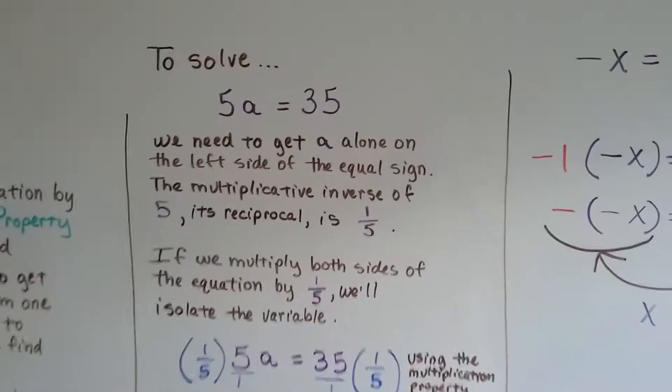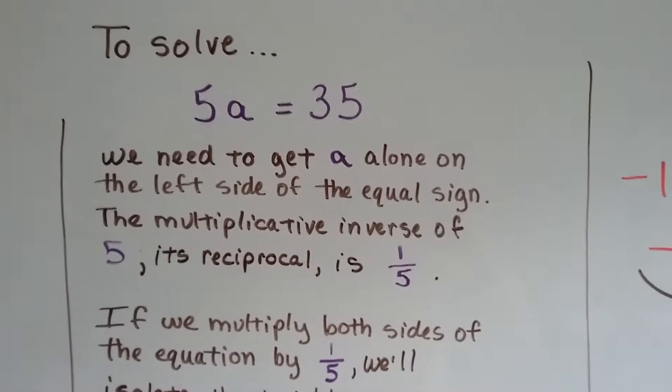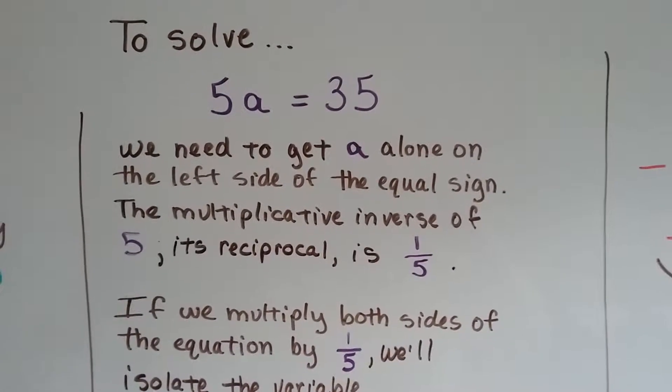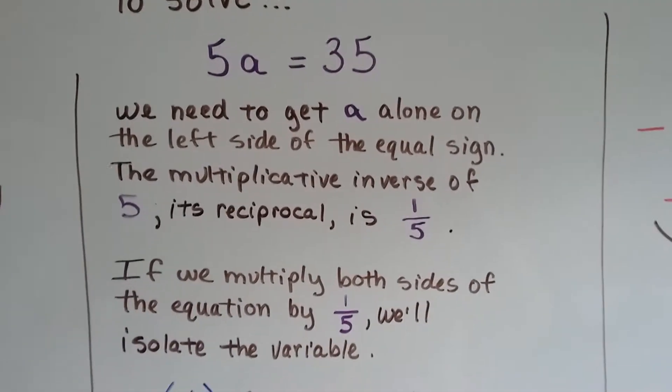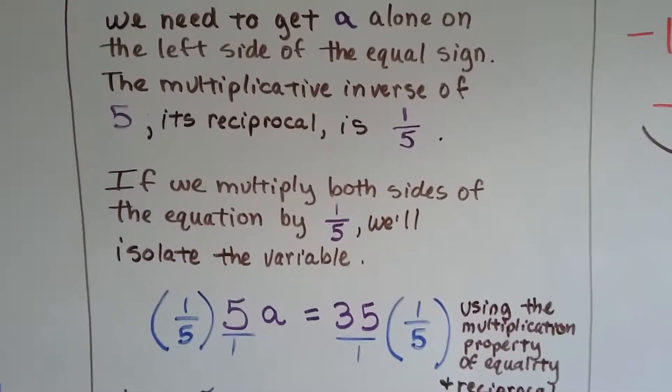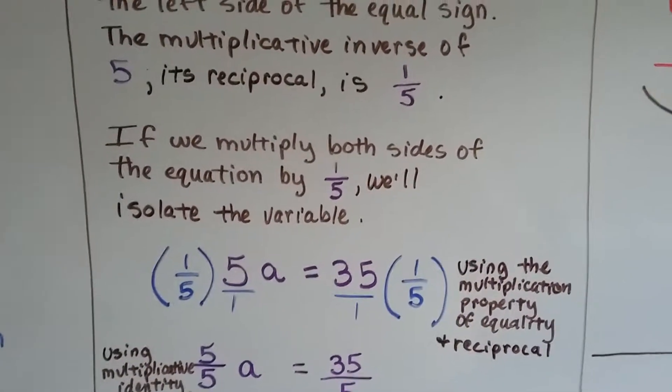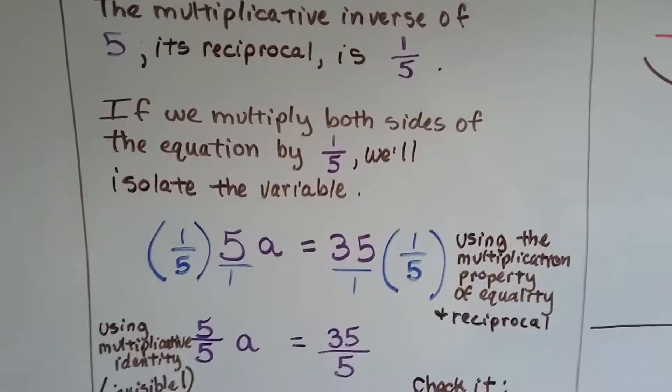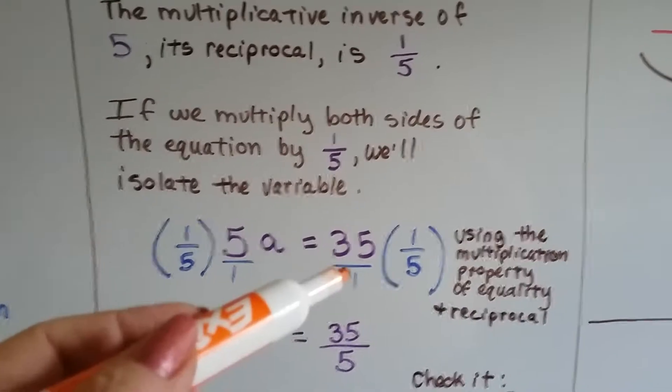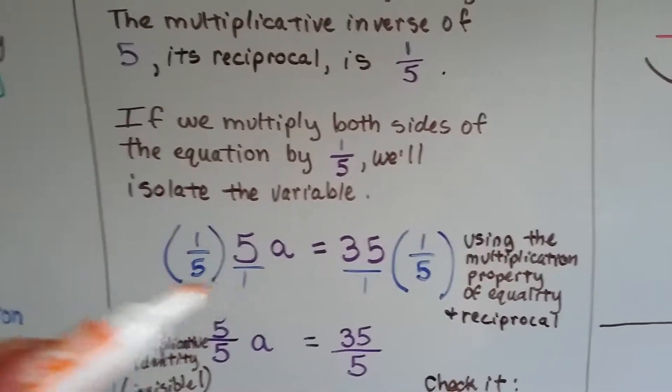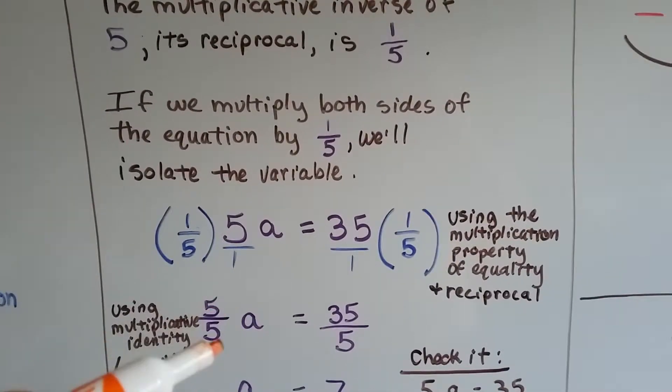To solve 5a equals 35, we need to get that a alone away from the five on the left side of the equal sign, and the multiplicative inverse of five, its reciprocal, is one-fifth. We just flip it around. If we multiply both sides of the equation by one-fifth, we'll isolate the variable and we'll create a one. In fact, it'll be our friend, the invisible one. One-fifth can be multiplied, we can just put a one underneath this five and underneath that 35, so we can multiply the fraction straight across, and we get five over five.